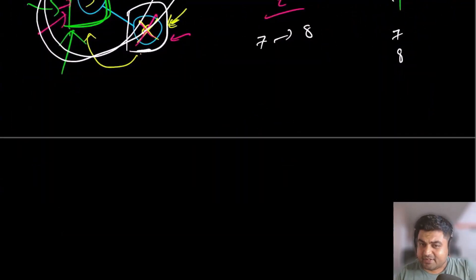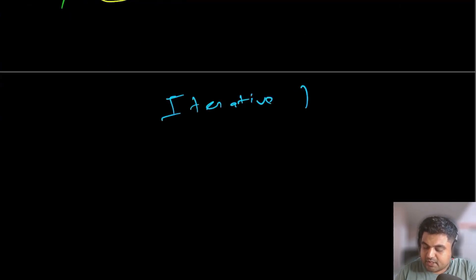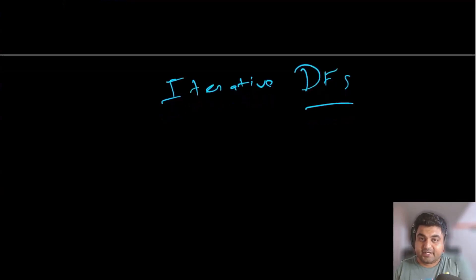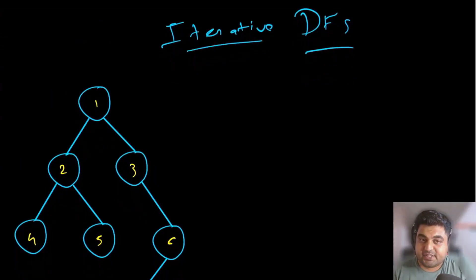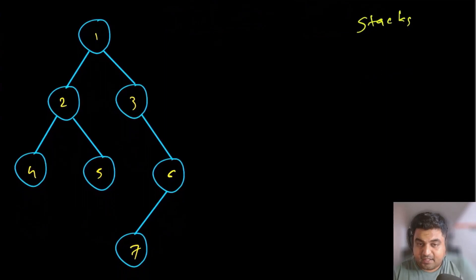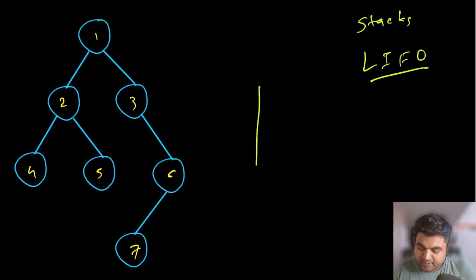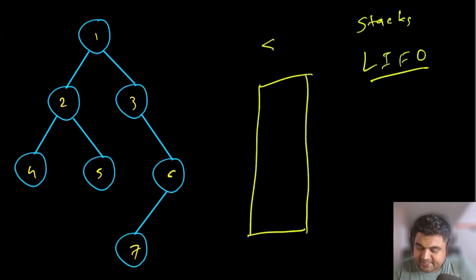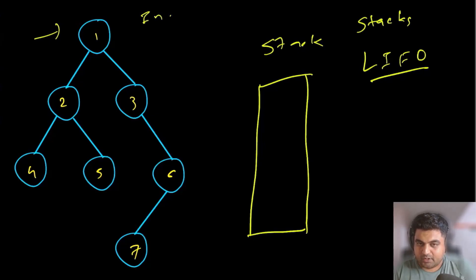There is only one difference between recursion and iteration. In order to understand it, we first need to see how an iterative DFS works. For the iterative approach, I'm going to show an example for a tree and also for a graph. The way iteration works is that we are going to use a stack to implement our DFS function. The key property of a stack is last in, first out — LIFO. We create a stack, add our root node inside it, and proceed with the in-order traversal.